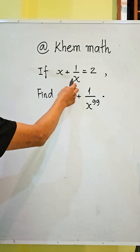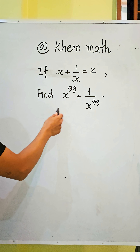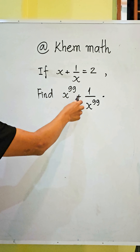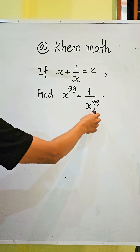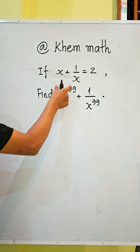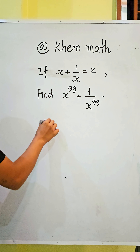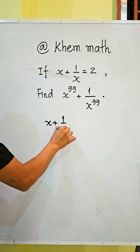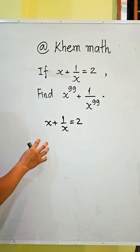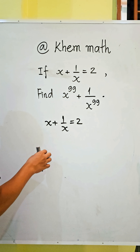If h plus 1 divided by h equals 2, find the value of the expression h to the power 99 plus 1 divided by h to the power 99. The first step is to use this equation: h plus 1 divided by h equals 2, and we must solve this equation to find the value of h, then use it to substitute into the expression.